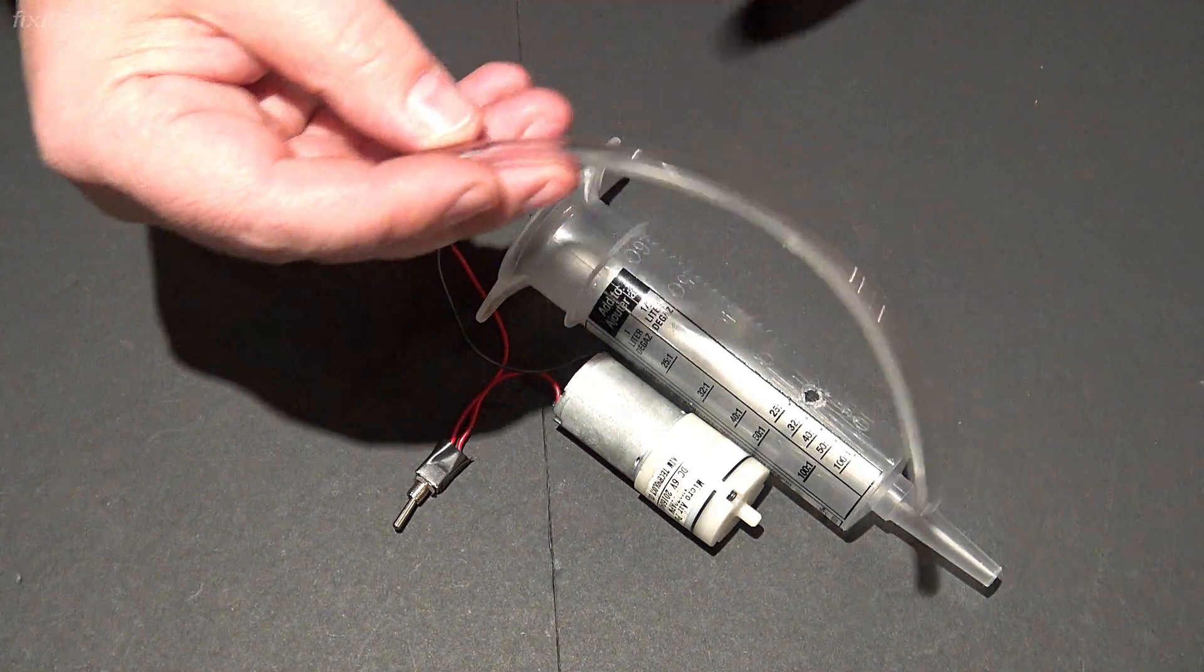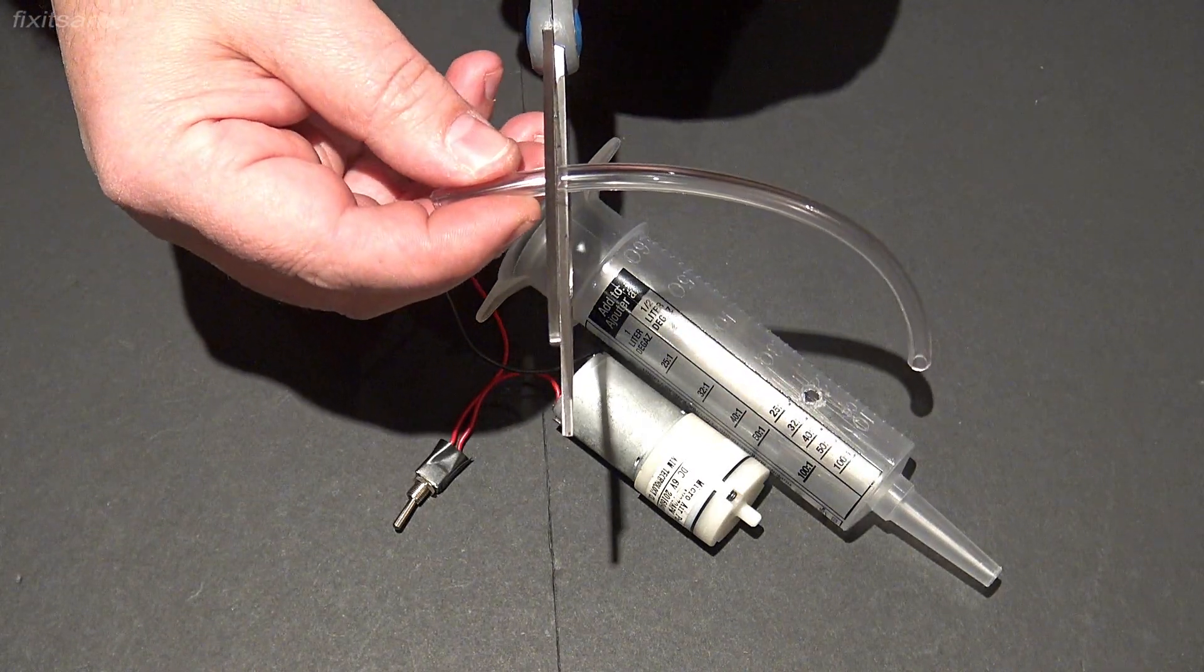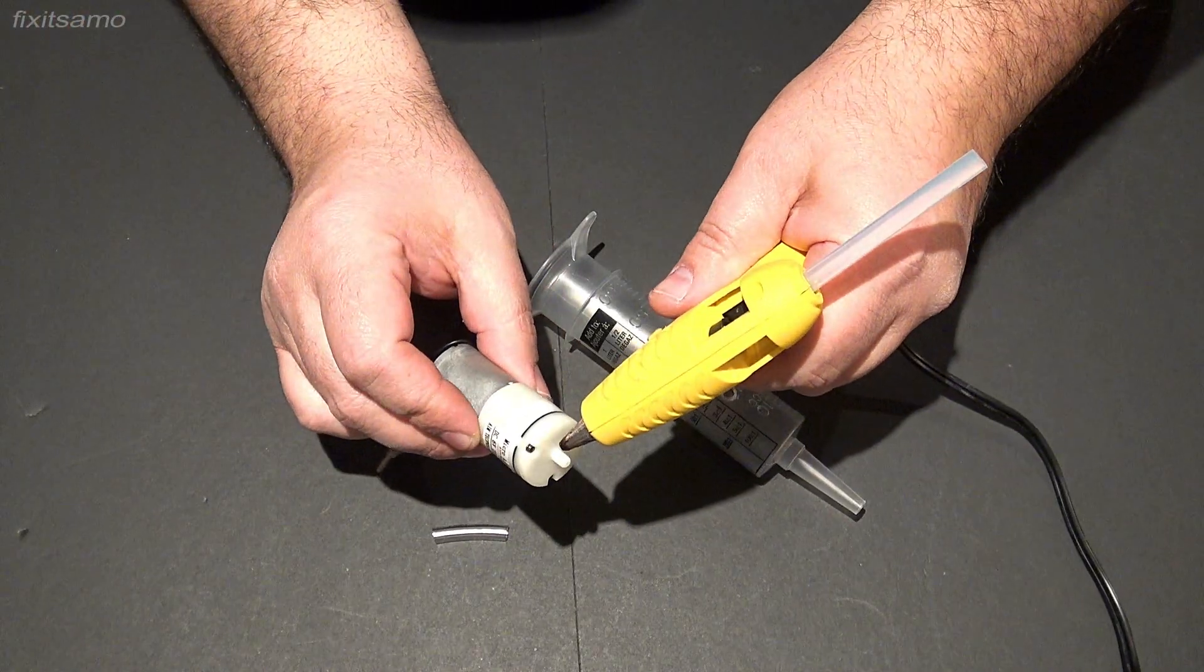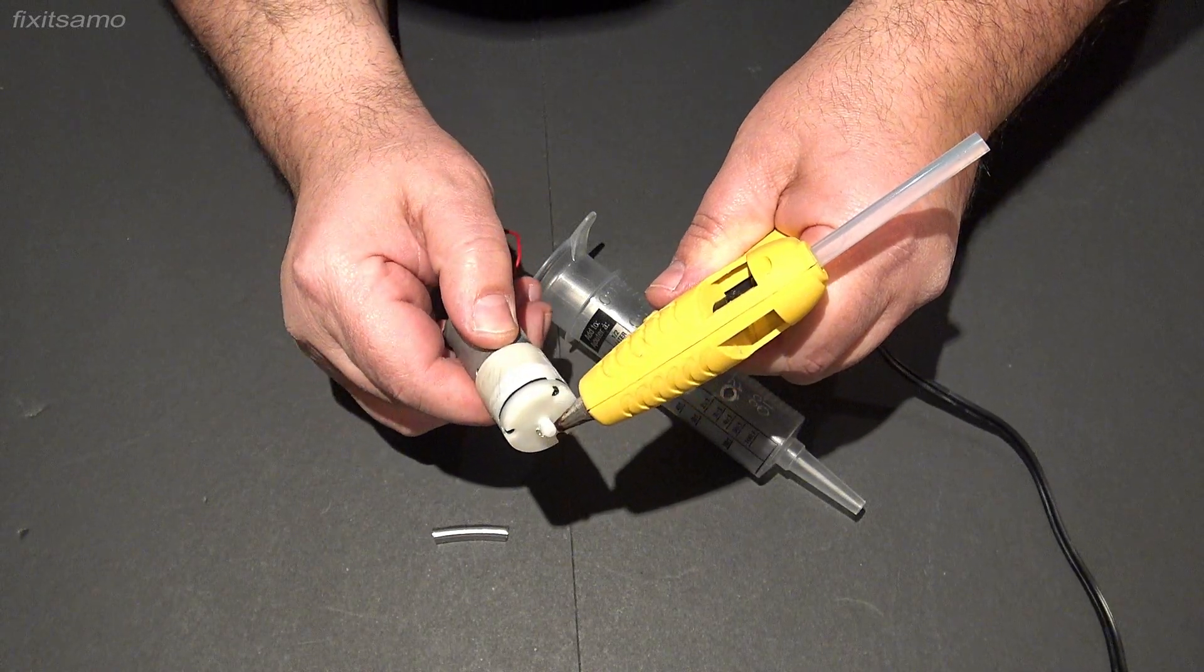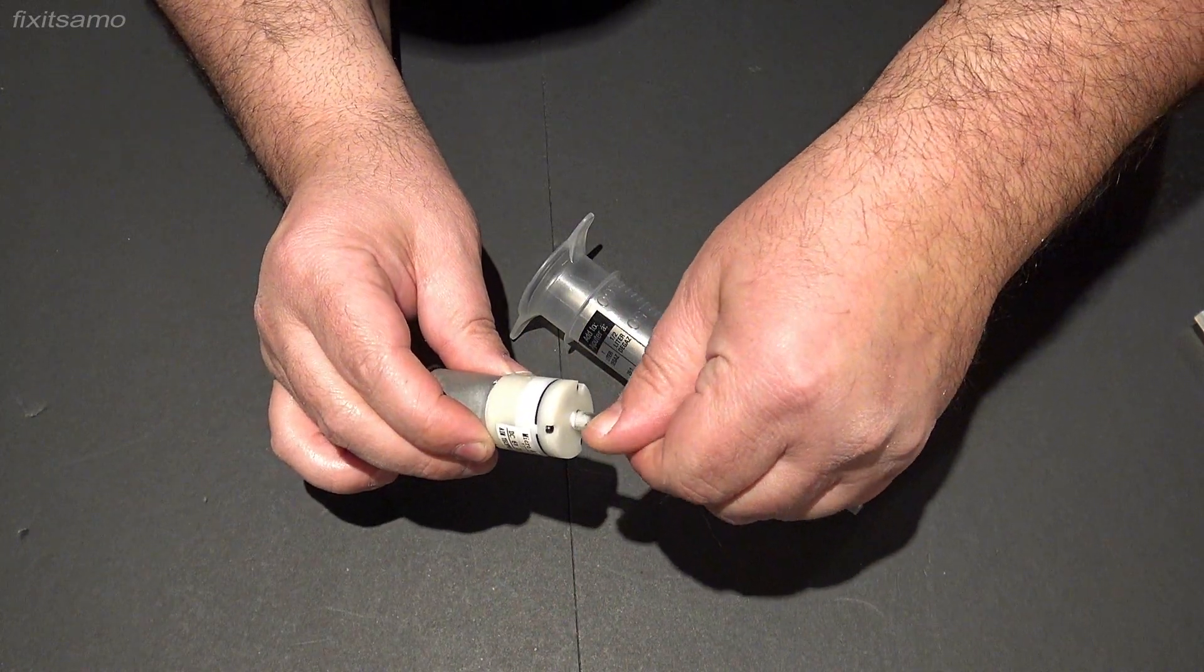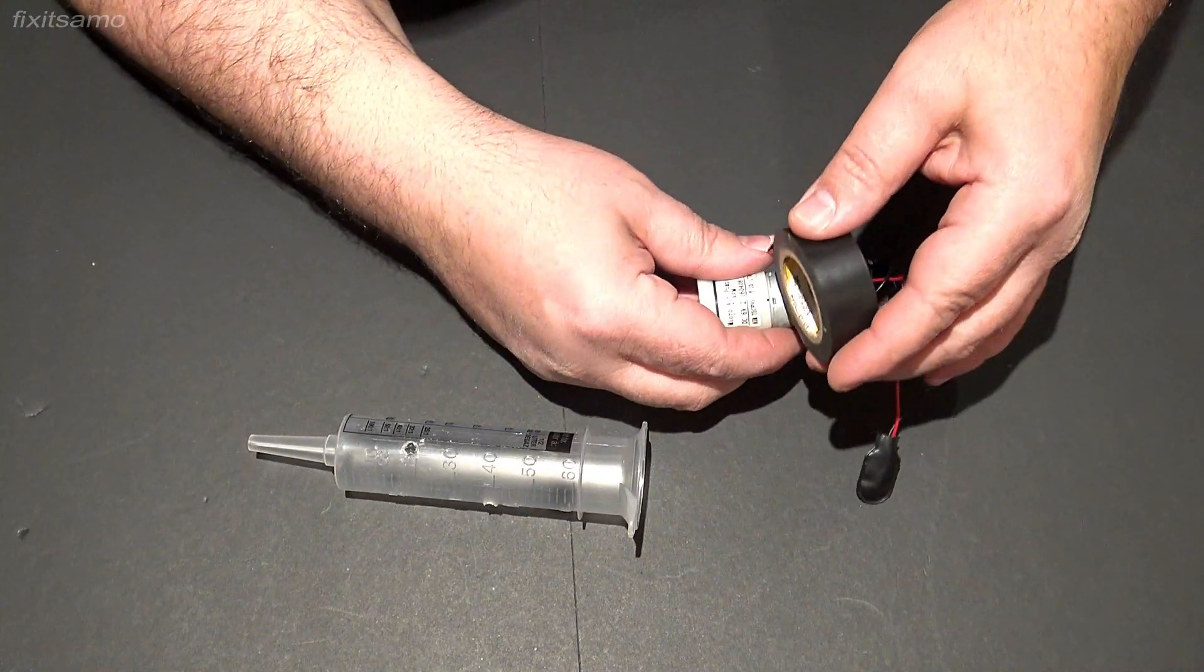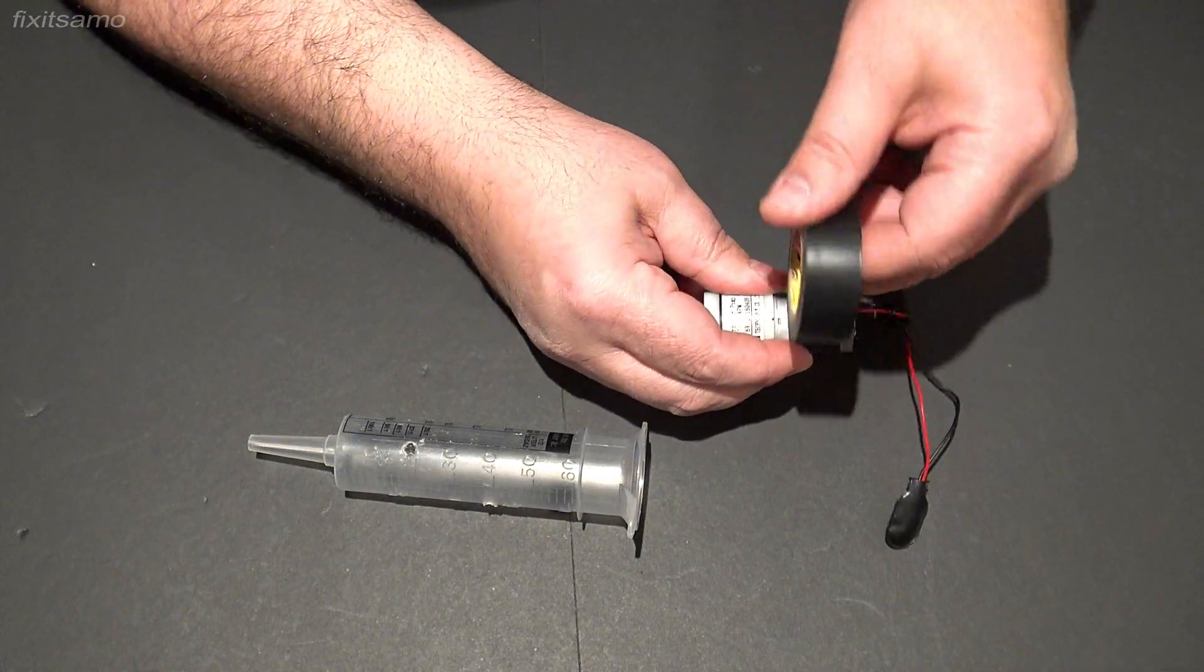And now we're gonna install our small tube. And now we're gonna add some electrical tape because we want it to fit very tight inside the tube.